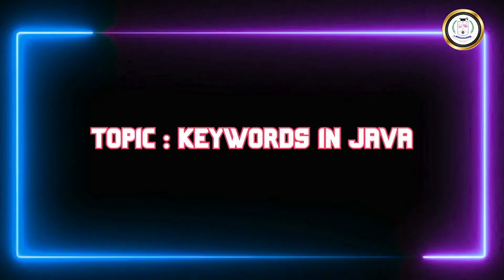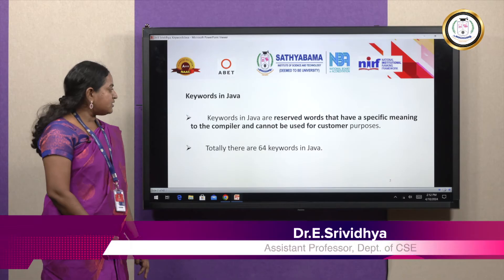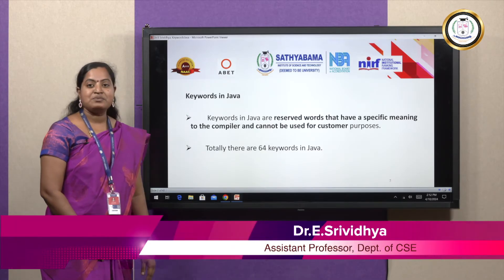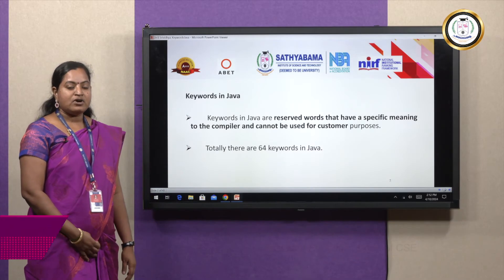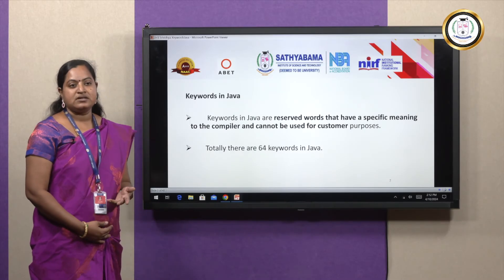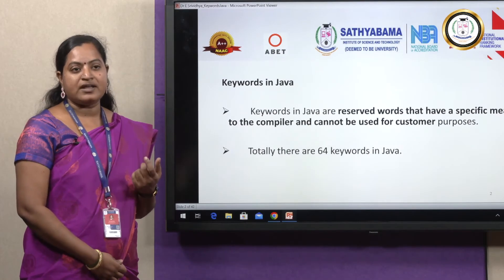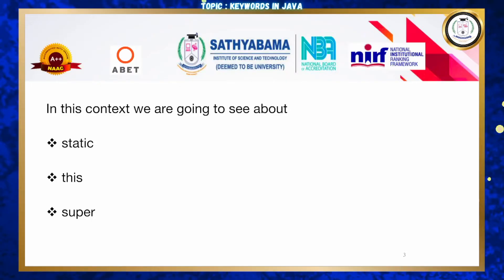Normally we know that in all programming languages we have keywords. In Java we will be having 64 keywords. Keywords are reserved words that have a specific meaning in a programming language. There is a special meaning for each and every keyword, and the user cannot use them for general purposes. We are going to see three types of keywords that are very useful: static, this, and super.